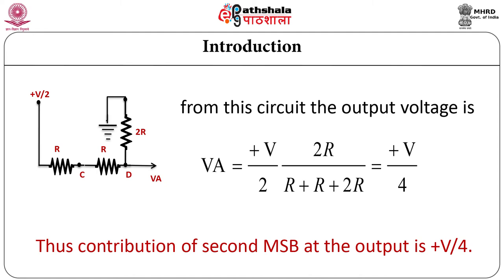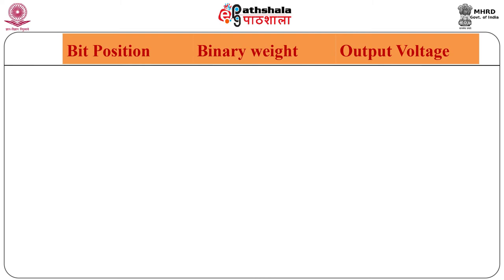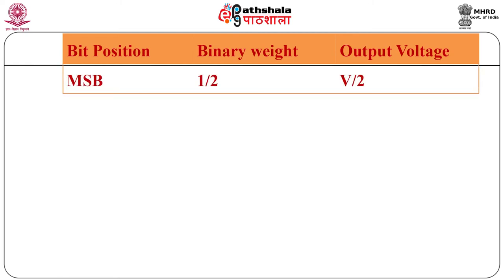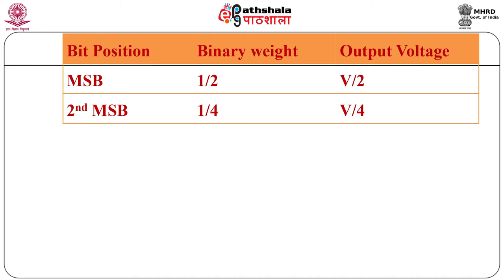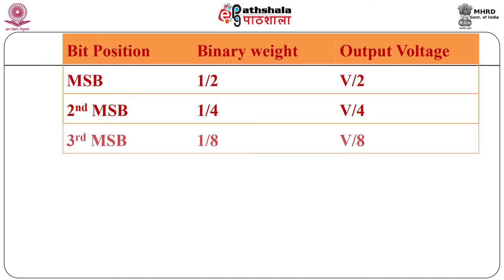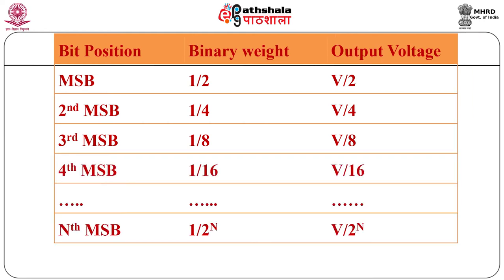Similarly, we can calculate the equivalent analog output for different digital combinations. The table shows output voltages for different bit positions: the MSB bit has output voltage +V/2, the second MSB contributes +V/4, the third MSB contributes +V/8, and so on. The nth position bit has binary weight 1/(2^n), and its contribution at the output is V/(2^n).